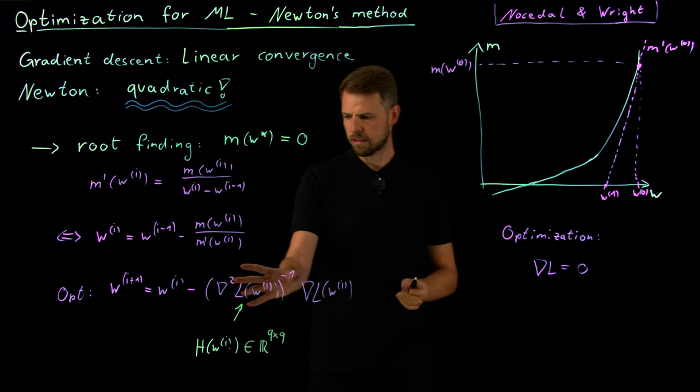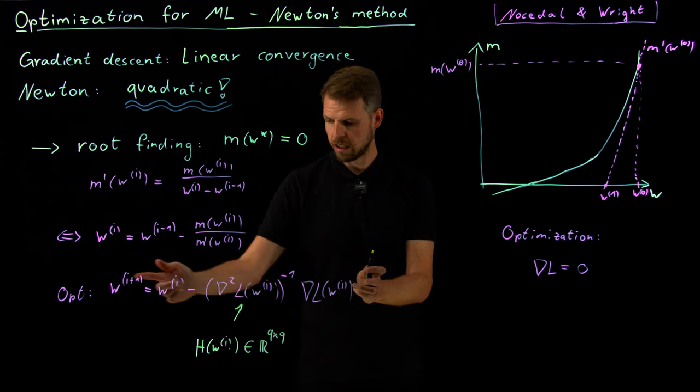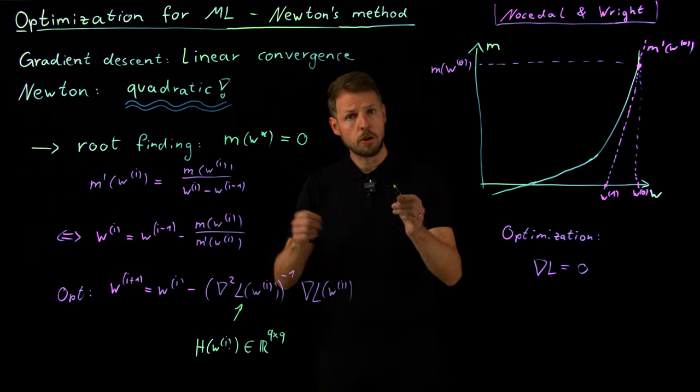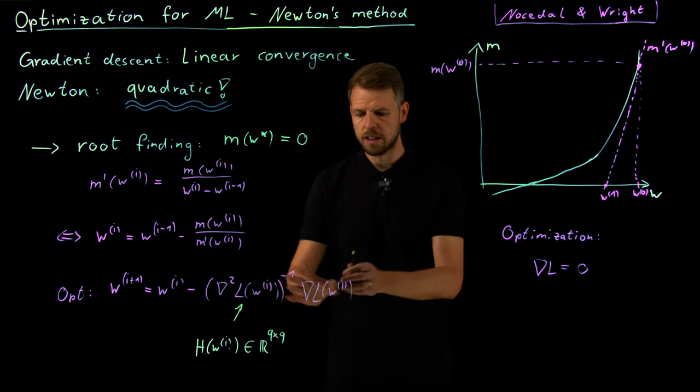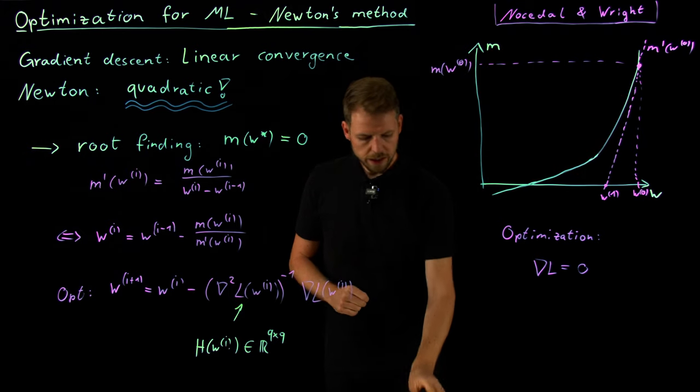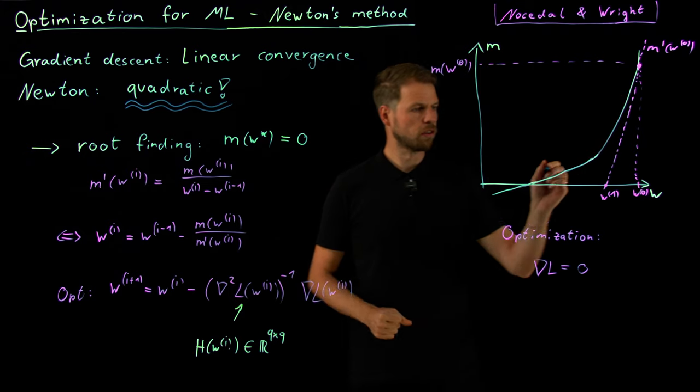So if you wish, it's gradient descent, steepest gradient descent, but with a particular choice of the step size. And very particular because it's not a scalar. This manipulates the gradient in all sorts of ways. And now if we look at this, then we can see why this has quadratic convergence. So now this is my new function value.